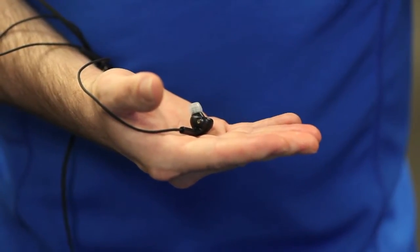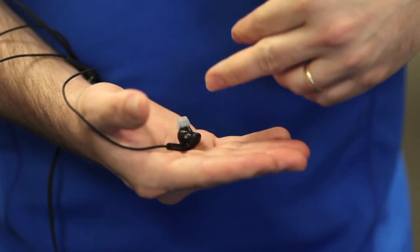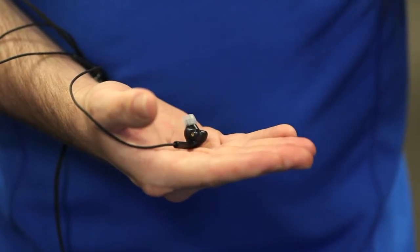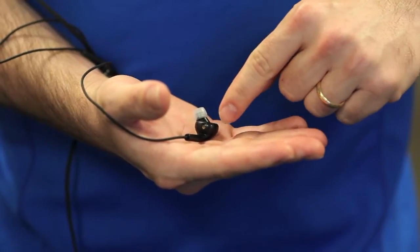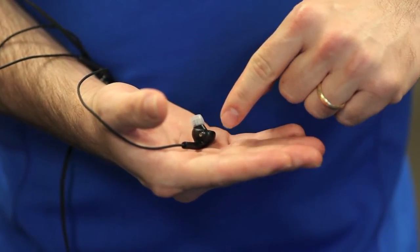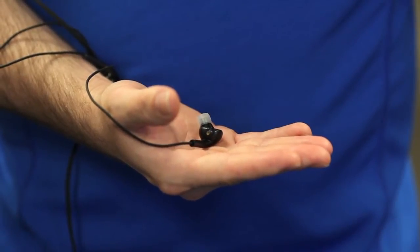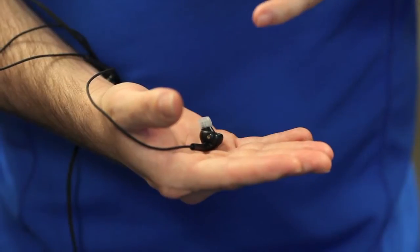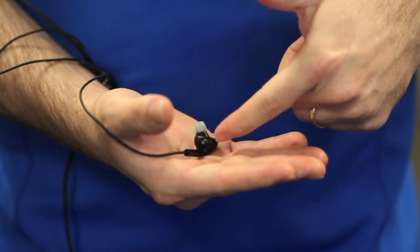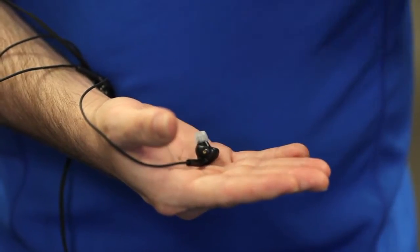At Valencell, we've developed a very versatile turnkey reference design that allows you to make basically any kind of earbud you want with our technology. The technology actually fits inside the base of the earbud, not the earbud tip. So you can have an awesome audio experience and awesome comfort for consumers because the sensor technology is located at the base of the earbud, allowing maximum versatility to any earbud style.